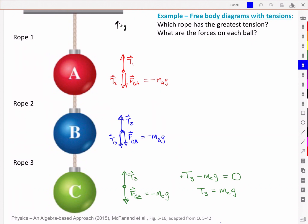Likewise, I can work it out for bauble B. I've got a positive T2 upward, a negative T3 because it's downward, and its own weight all acting on that bauble. And it's in equilibrium again, set equal to zero.